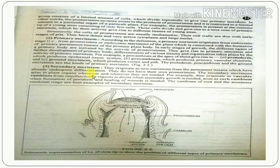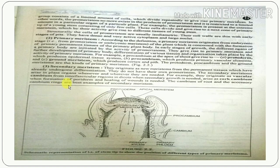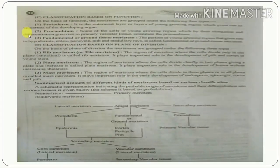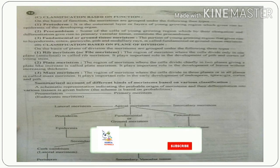That was our second classification based on origin and method of development. Our third classification is based on function. On the basis of function, meristems are grouped into three types: protoderm, pro-cambium, and fundamental or ground tissue meristem. Protoderm is the outermost layer of the growing areas which gives rise to the epidermis of the developing organ.